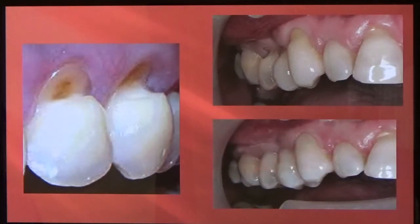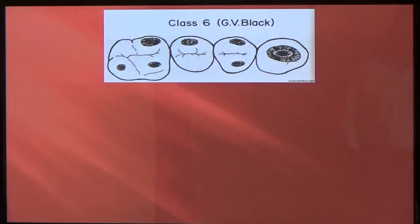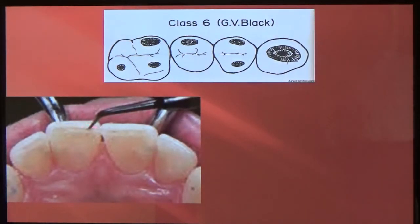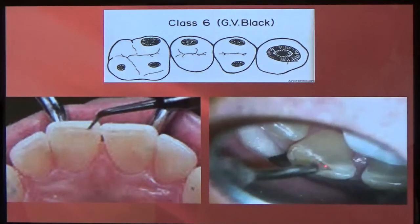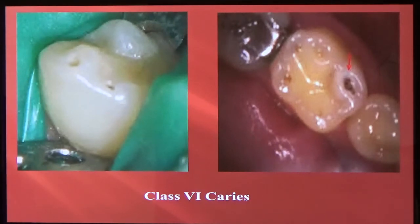Some more toothbrush abrasion or attrition examples, and there they are restored. Class 6 cavities occur on the incisal edge of anterior teeth or on the cusp tip of posterior teeth — so on the edge or on the cusp tip. Here you can see that on the cusp tip of molars, cusp tip of premolars, or the canine. Here's a clinical view — on the incisor, there's wear and decay into the dentin. You can see cavities on the cusp tip of the cuspid, and on the molar, right on the cusp tip. Those are class 6 of molars and premolars or incisal edges of anterior teeth.